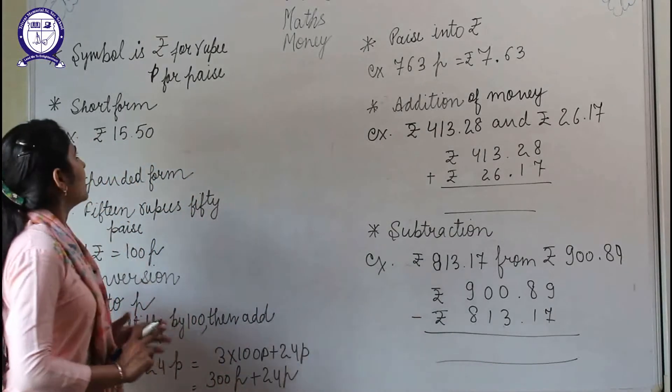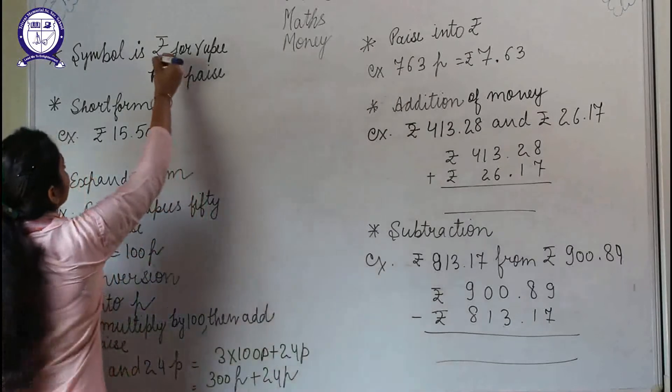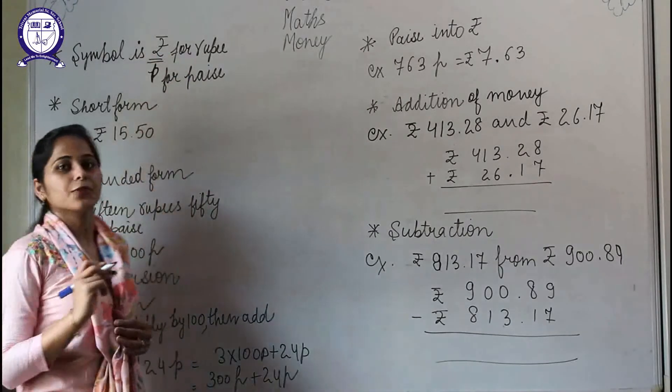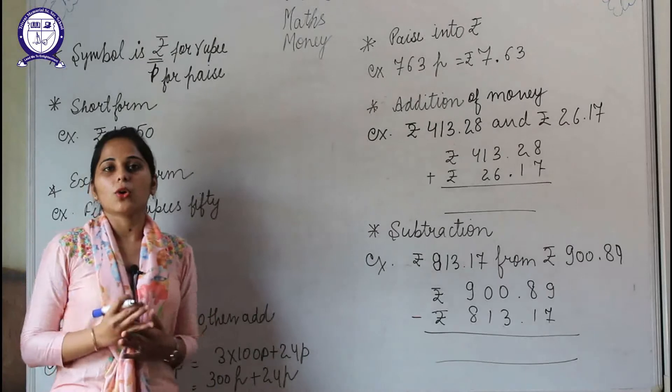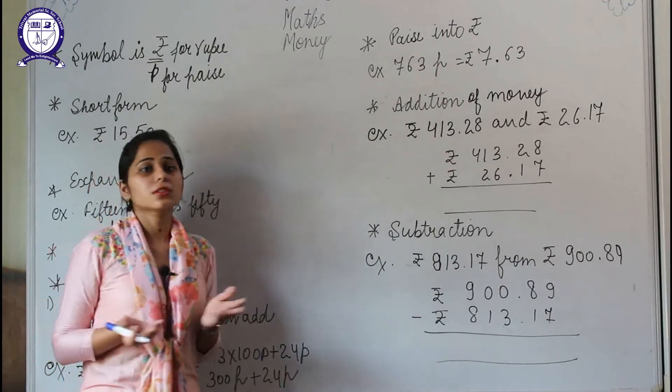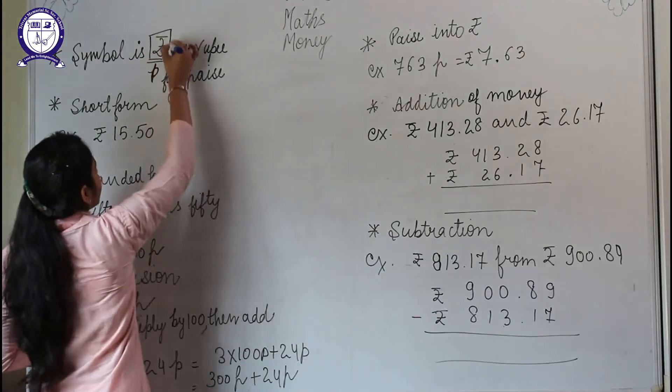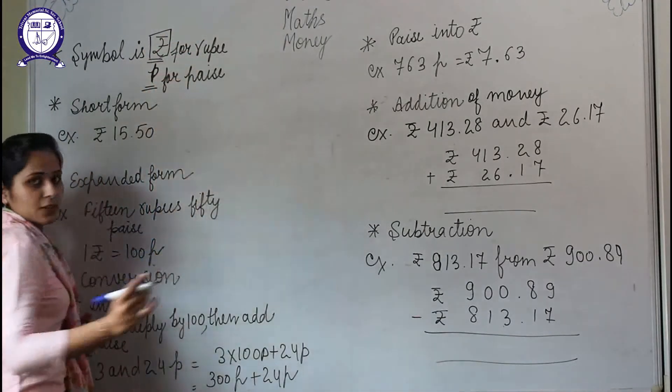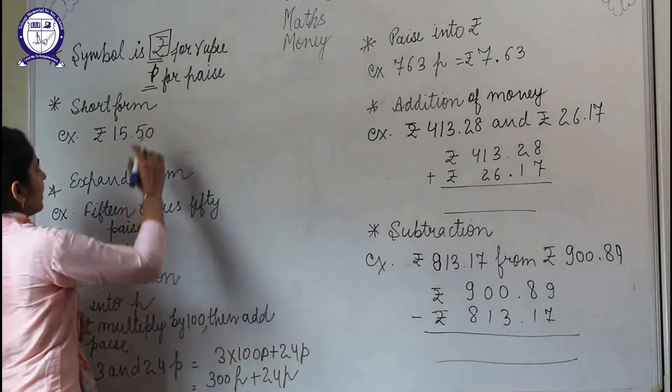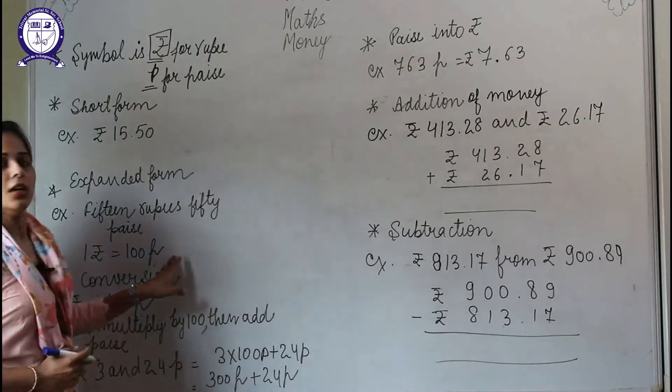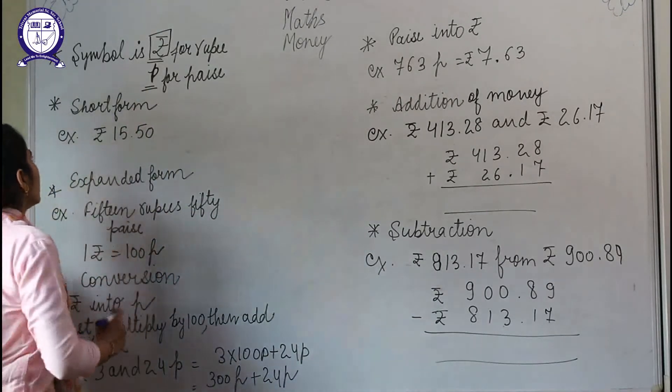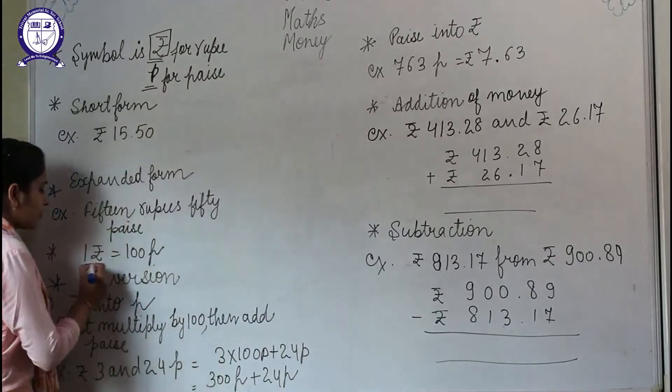The symbol is rupee, because in India the currency followed is rupee. In other countries there are dollars, euros, and others. This is the sign for rupee and this is the sign for paise. Rupee is the larger unit than paise. 1 rupee equals 100 paise.